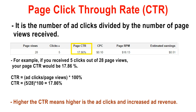Page CTR is 17.86%. How this is calculated: CTR equals ad clicks divided by page views, so that is 5 divided by 28 multiplied by 100, which gives 17.86%. One thing to remember is higher the CTR means higher ad clicks and increased ad revenue.